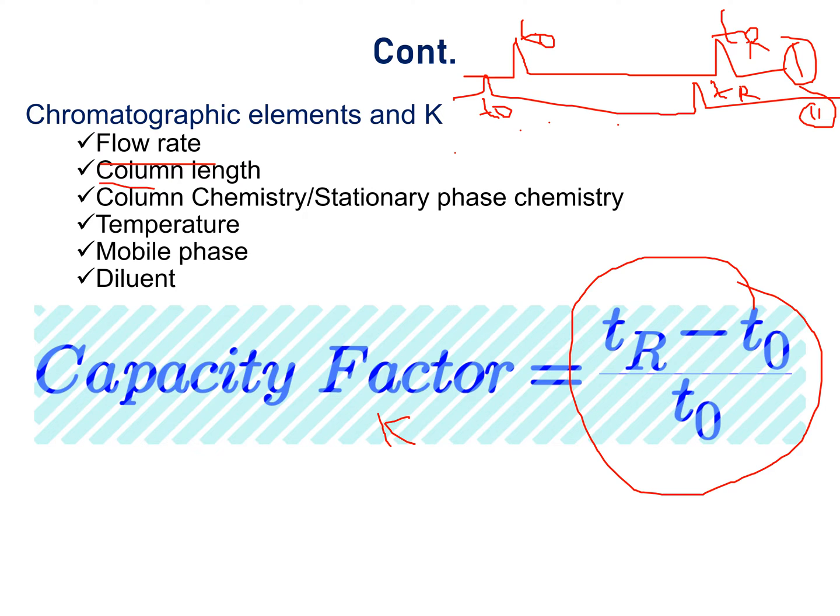Second case, length of the column or column length. Let us consider in case 1, length of the column is 25 cm, whereas in case 2, length of the column is 10 cm. Other chromatographic parameters remain the same in each case. In the first case, Tr will increase and T0 will increase. In the second case, Tr will decrease and T0 will also decrease.